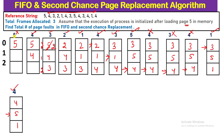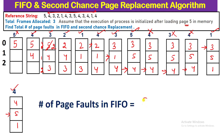Counting all page faults in FIFO — we exclude the initial load of page 5 as given in the question. Counting: 1, 2, 3, 4, 5, 6, 7, 8, 9. There are a total of 9 page faults generated by the FIFO page replacement algorithm.